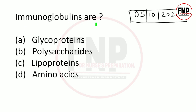First question: Immunoglobulins kya hootay hain, kis se banay hootay hain? Options are: glycoprotein, polysaccharide, lipoprotein, or amino acid. The right answer is option A - glycoprotein. Immunoglobulins are glycoproteins.